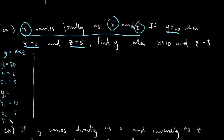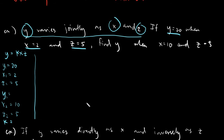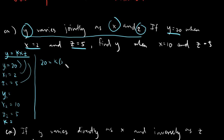Solving for k, we need the first set. Our formula is y = kxz, so we replace all values: 20 is equals to k times 2 times 5. We put parentheses because this is multiplication — we cannot write it as k25, which would look like the number k25. Solving: 2 times 5 is 10.